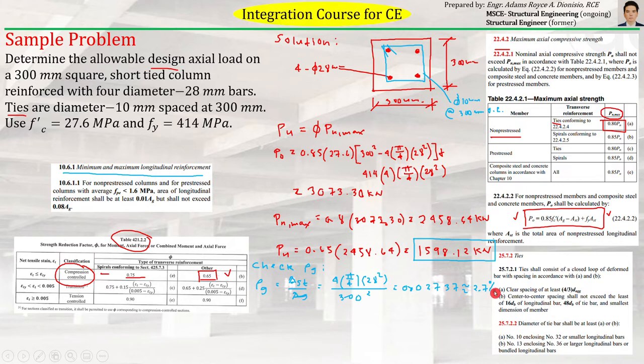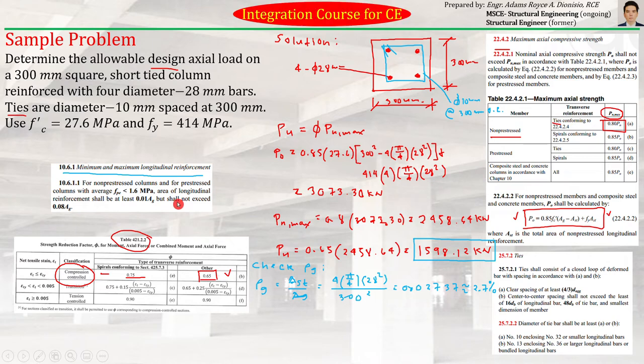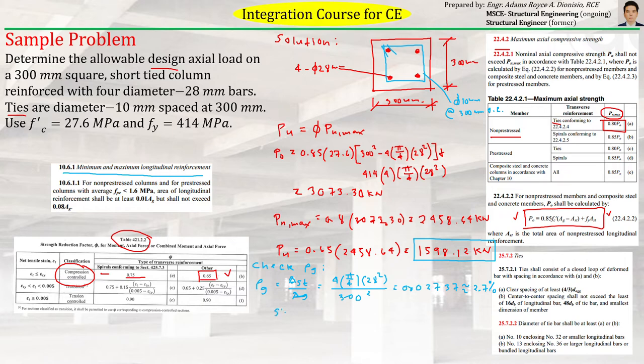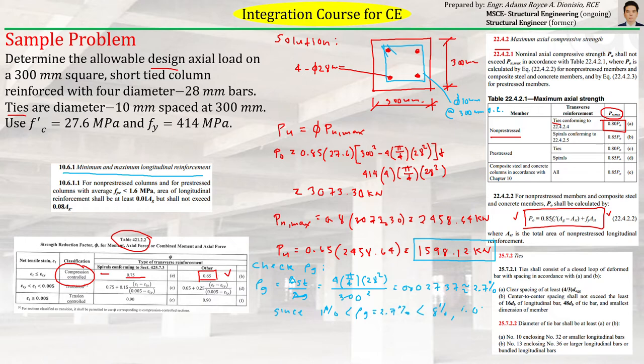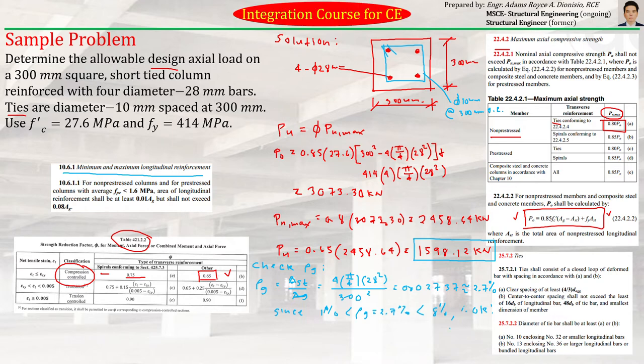Because if you look at this formula, if we multiply AG on the right side, AST equals 2.7 percent of AG. And according to the code, our AST, the longitudinal reinforcement, must be within 1 percent of AG up to 8 percent. And since 1 percent is less than row G of 2.7 percent, which is also less than 8 percent, therefore, we're okay. We're okay with the reinforcement. We won't have a problem.